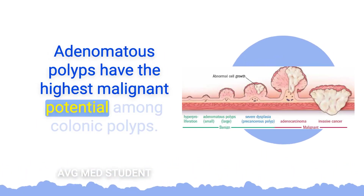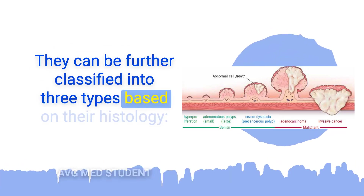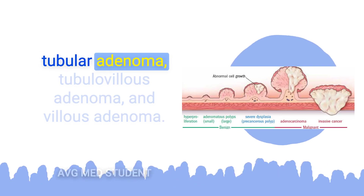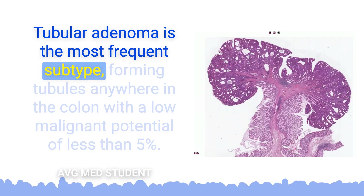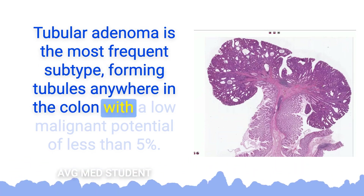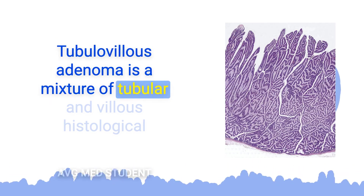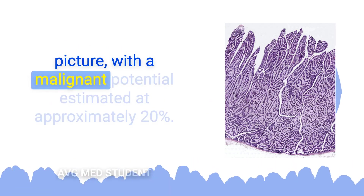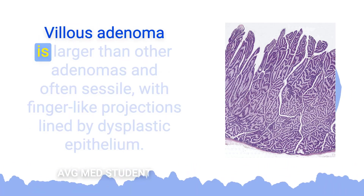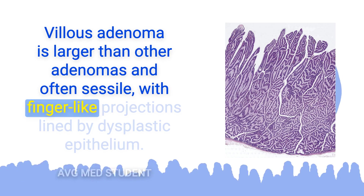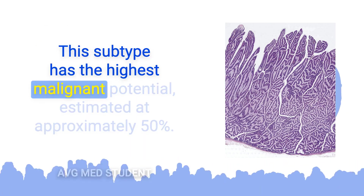Adenomatous polyps have the highest malignant potential among colonic polyps. They can be further classified into three types: tubular adenoma, tubulovillous adenoma, and villous adenoma. Tubular adenoma is the most frequent subtype, forming tubules anywhere in the colon with a low malignant potential of less than 5%. Tubulovillous adenoma is a mixture of tubular and villous histology, with a malignant potential of approximately 20%. Villous adenoma is larger and often sessile, with finger-like projections lined by dysplastic epithelium and the highest malignant potential at approximately 50%.